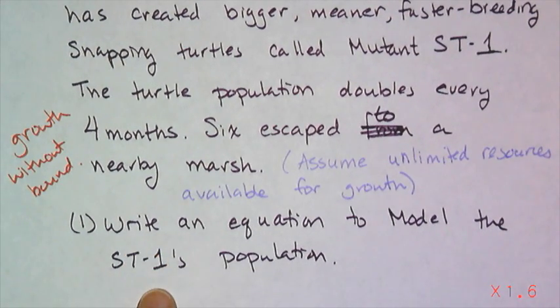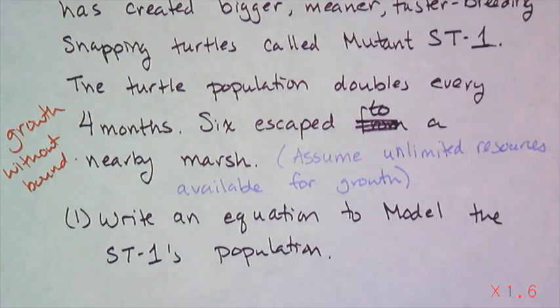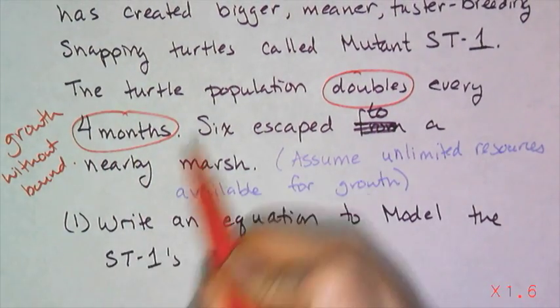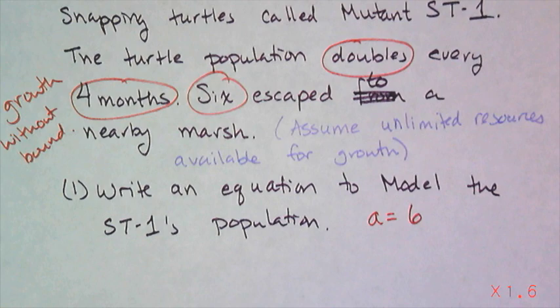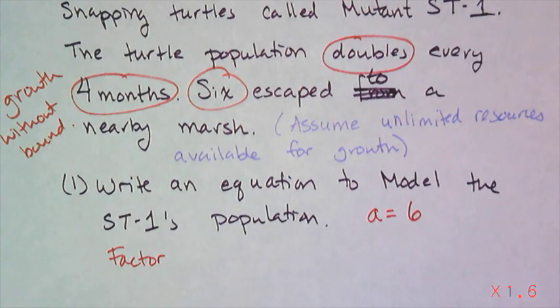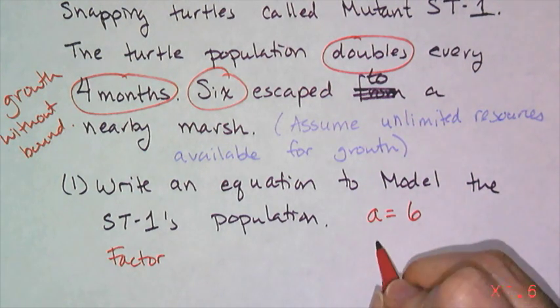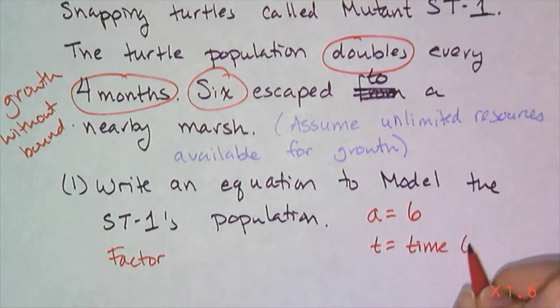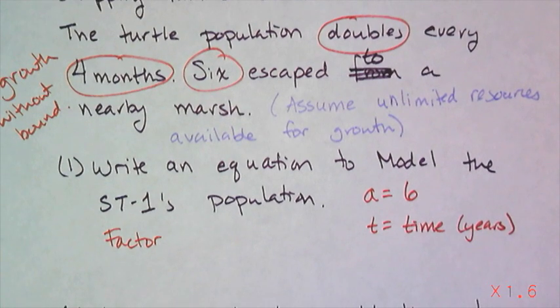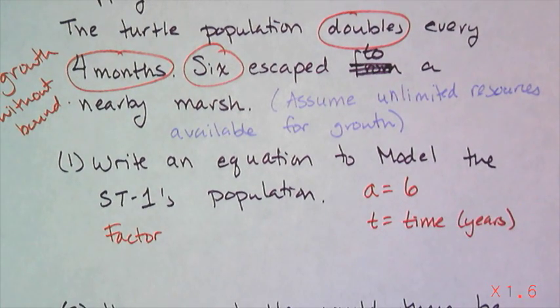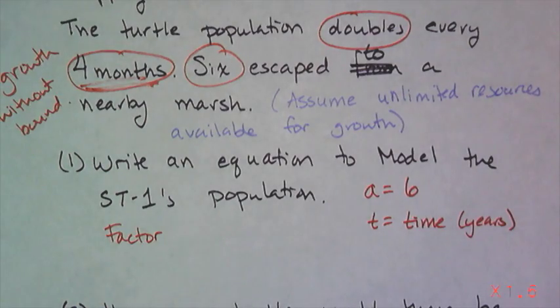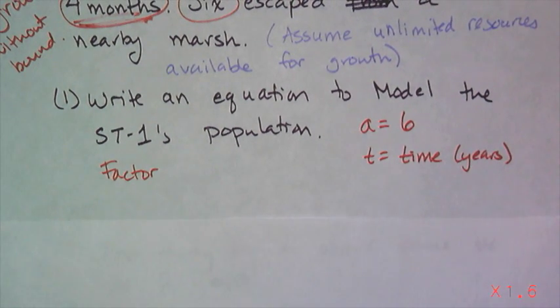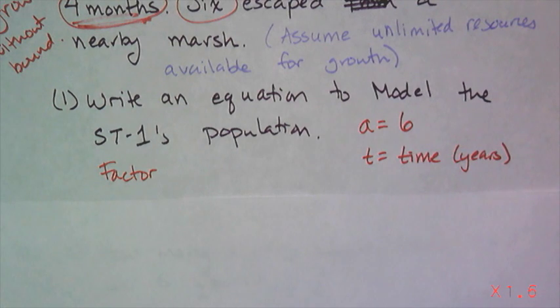Now we're going to write an equation to model the ST-1's population. So I need to get the information I need from the problem. First, that they double every four months, and that six of them escaped. So that six is a, because that's how many turtles there were originally released. What I use for the factor is going to depend on what unit I use for time. So I'm going to say T is equal to the time in years. Usually in a problem, I'll specify if I want months or years or whatever. So I need to find the factor in years, and I give it to you in months. So this is going to take a little bit of extra work here. I don't say it doubles every year. I say it doubles every four months. So I'm going to make a little table to figure out what my factor is in years.